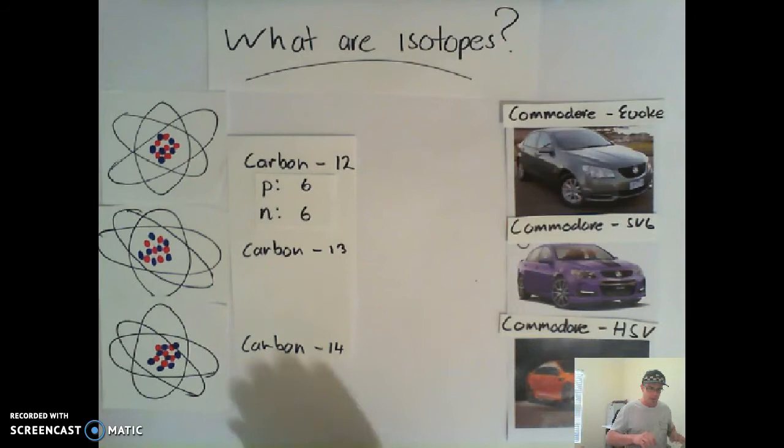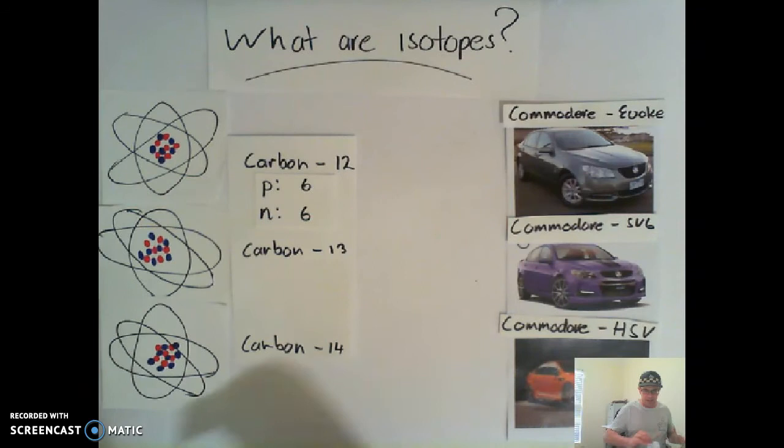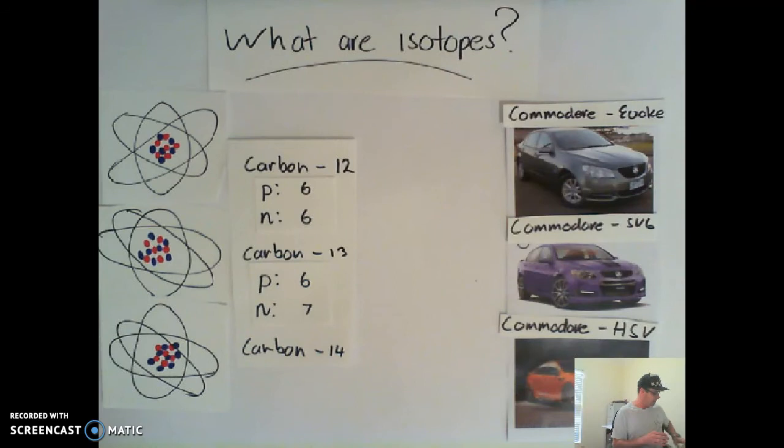Carbon-13, on the other hand — let's count them up — has six protons and seven neutrons. So carbon-13 still has the six protons but has seven neutrons.